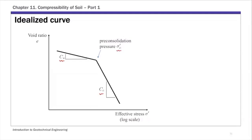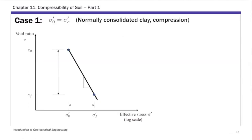We're going to take this information and look at how to calculate primary consolidation. I divide the calculation scenarios into three cases, depending on the relationship between current effective stress and pre-consolidation pressure. In all three cases, what we're trying to do is figure out the void ratio change for a given stress change.